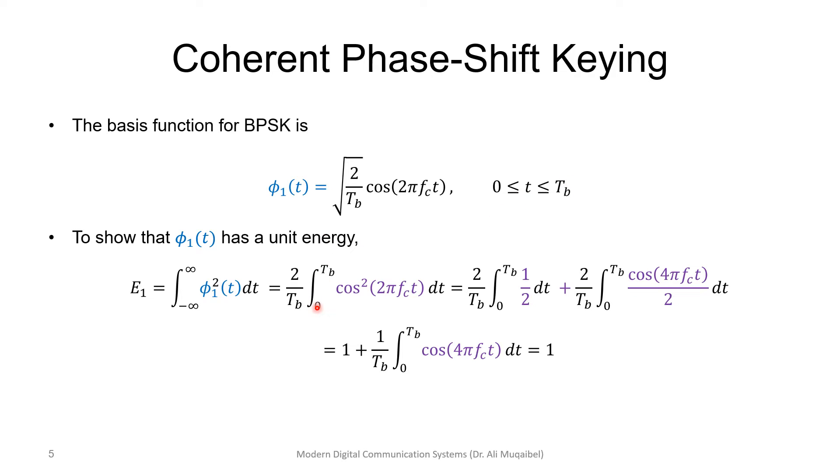I am replacing the signal with its square, so the square root will disappear. This is 2 over Tb, and then cosine squared. To integrate cosine squared, we use that trigonometric identity, 1 half plus cosine double the angle.